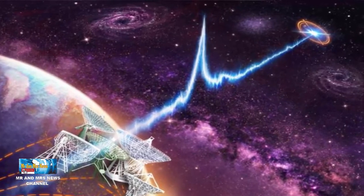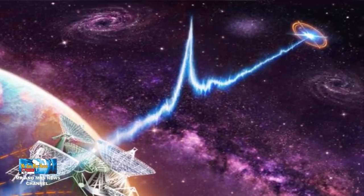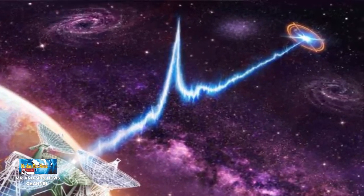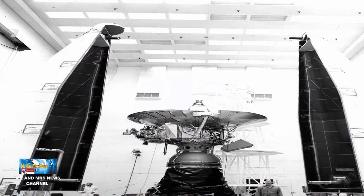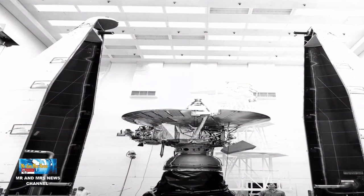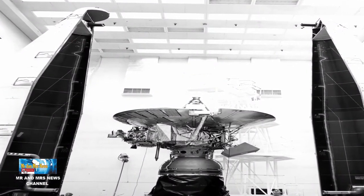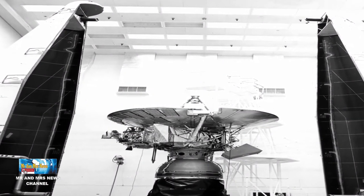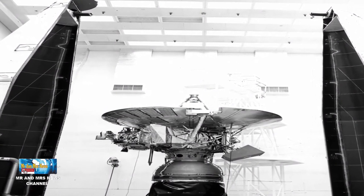Jika proyek ini terealisasi, ini bukan pertama kalinya NASA mengirim foto telanjang ke luar angkasa. Pada tahun 1970-an, plakat yang dibawa ke atas pesawat luar angkasa Pioneer 10 dan Pioneer 11 menampilkan ilustrasi bentuk manusia telanjang.